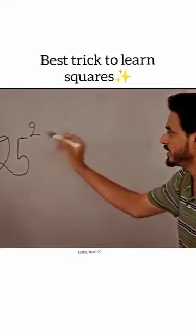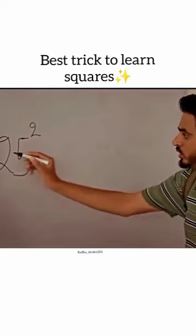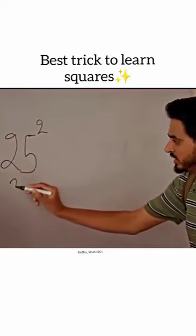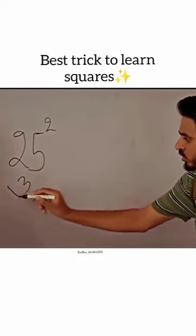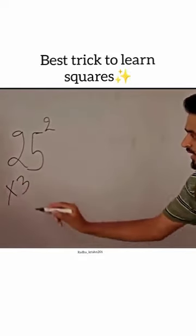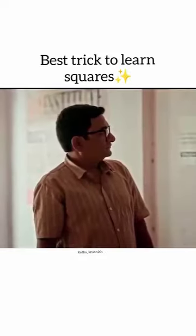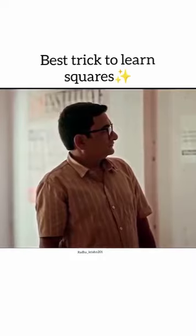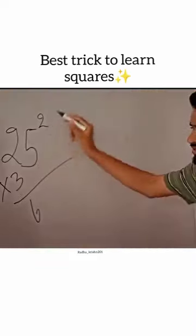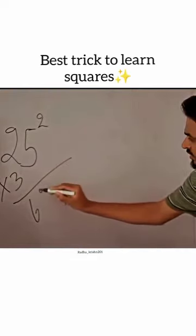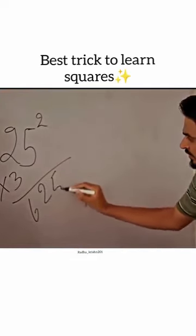We have put the square here. After 2, we have 3. We have multiplied this: 2 times 3 equals 6. Then 5 squared is 25. So the result is 625.